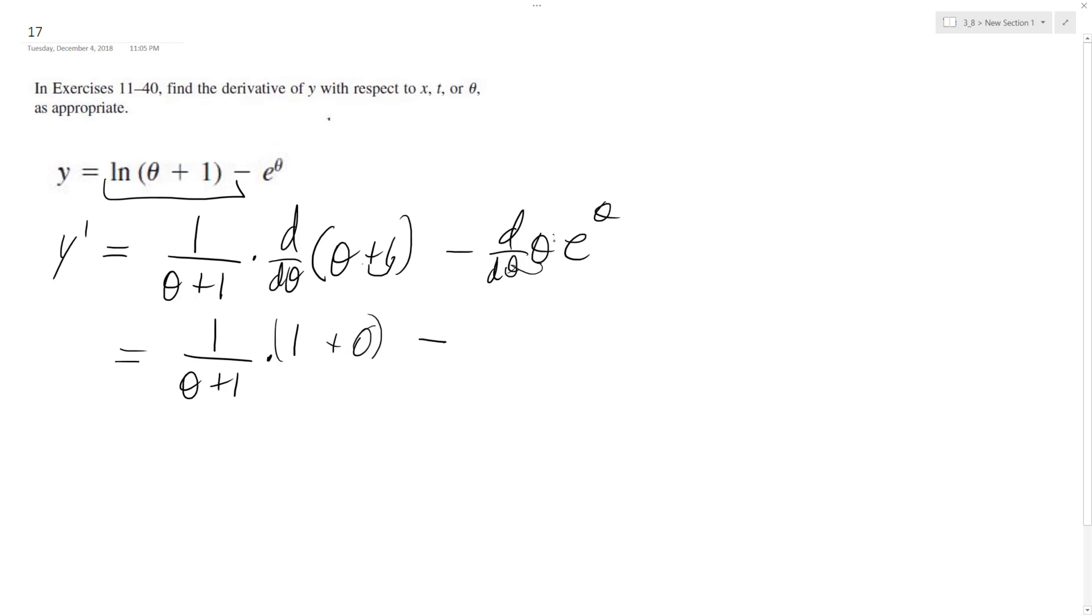and then minus - the derivative of theta is 1, so we get e raised to theta. So essentially this just becomes 1 over (1 + theta) minus e raised to the theta, and that's it.